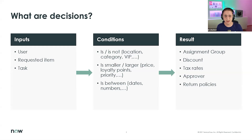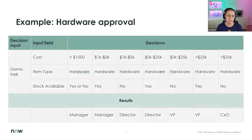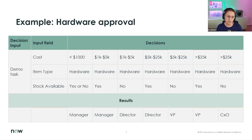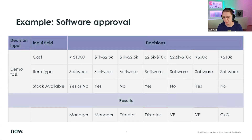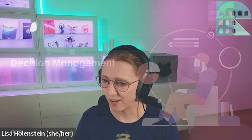At any given time you might have decision tables for hardware or software approval. This is one of the more complex examples based on a couple of different inputs, where the result is the person who has to approve something. This can differ for hardware versus software — just keep this in mind before we go on.